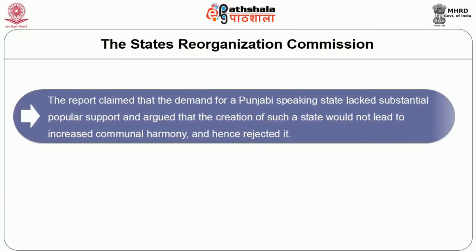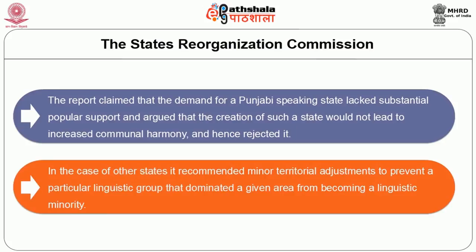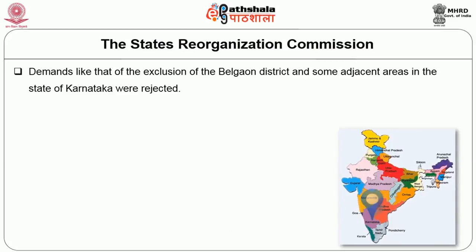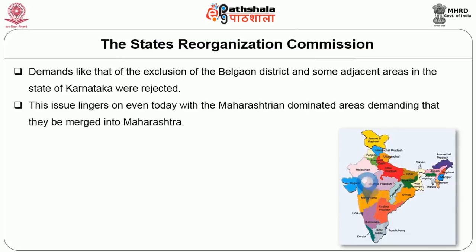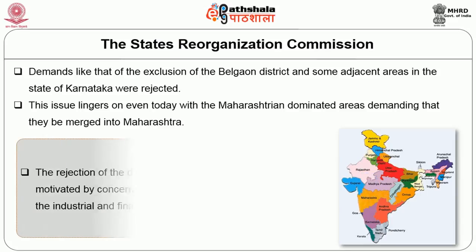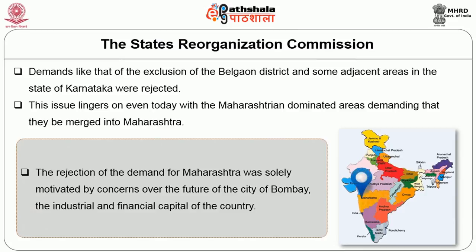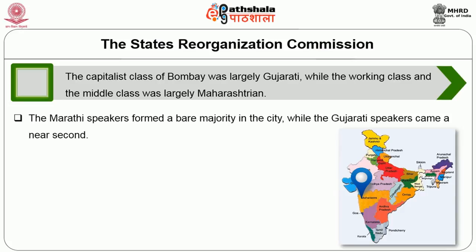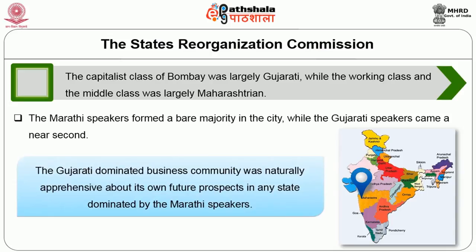In the case of Maharashtra, the commission recommended combining Marathi-speaking areas of Bombay and Hyderabad with Gujarati-speaking areas and the states of Saurashtra and Kutch to form a larger bilingual Bombay state, while the Marathi-speaking areas of Madhya Pradesh would form a separate state of Vidarbha. The rejection of Maharashtra's demand was chiefly motivated by concerns over the future of Bombay city — the industrial and financial capital — where the capitalist class was largely Gujarati while the working and middle class was largely Maharashtrian. Some similar demands, like that for the Belagavi district to be merged into Karnataka, were also rejected and linger on even today.